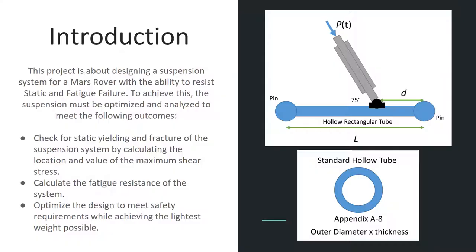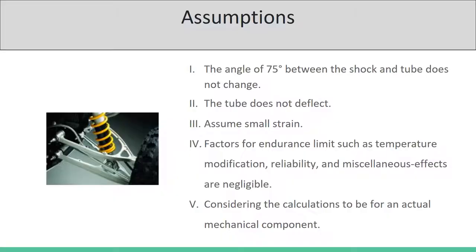This project is about designing a suspension system for a Mars Rover with the ability to resist static and fatigue failure. To achieve this, the suspension must be optimized and analyzed to meet the following outcomes. We must check for static yielding and fracture of the suspension system by calculating the location and value of the maximum shear stress, calculate the fatigue resistance of the system, and optimize the design to meet safety requirements while achieving the lightest weight possible.